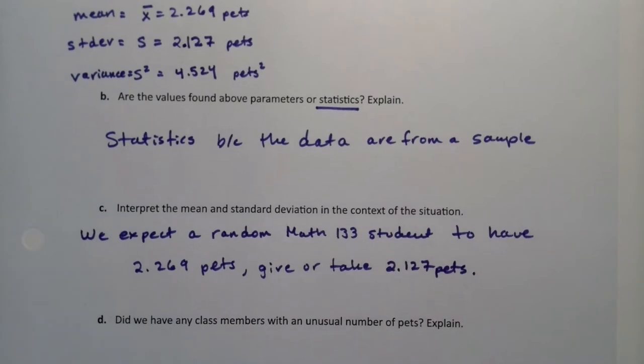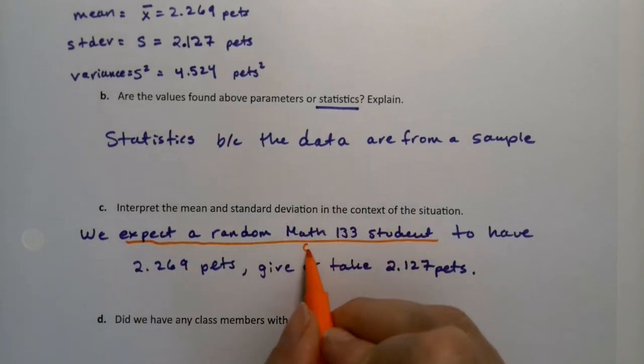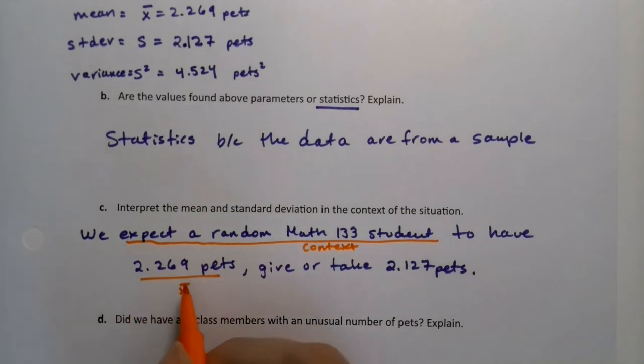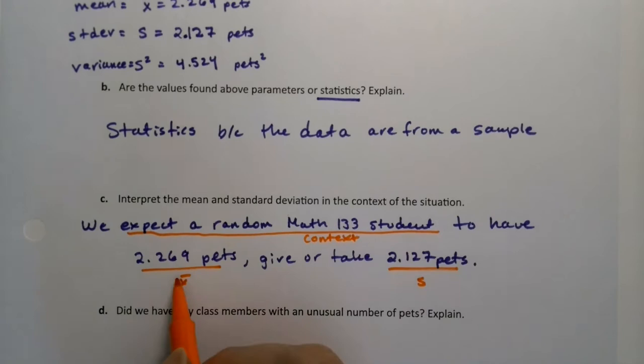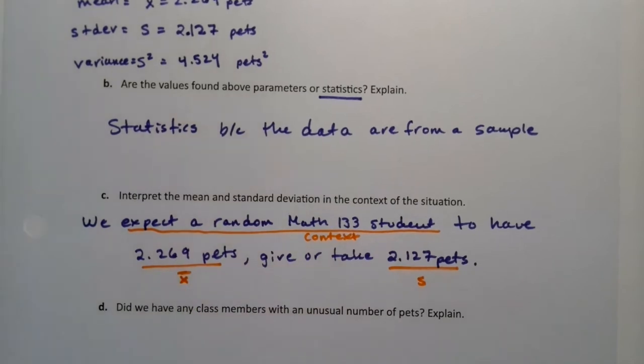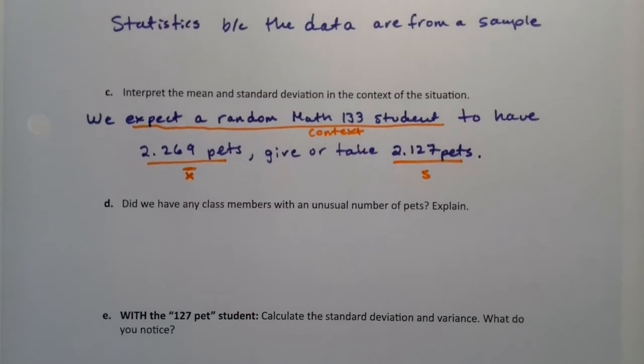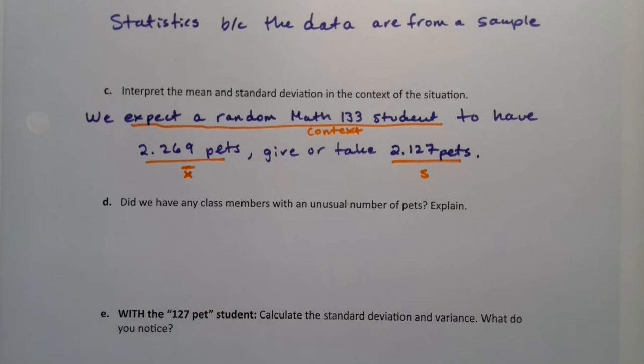So we're following that script. The explanation and context is all the stuff, right? That's the context. And then there's the mean, there's the standard deviation. Did we have any class members with an unusual number of pets? Remember, unusual means past two standard deviations.